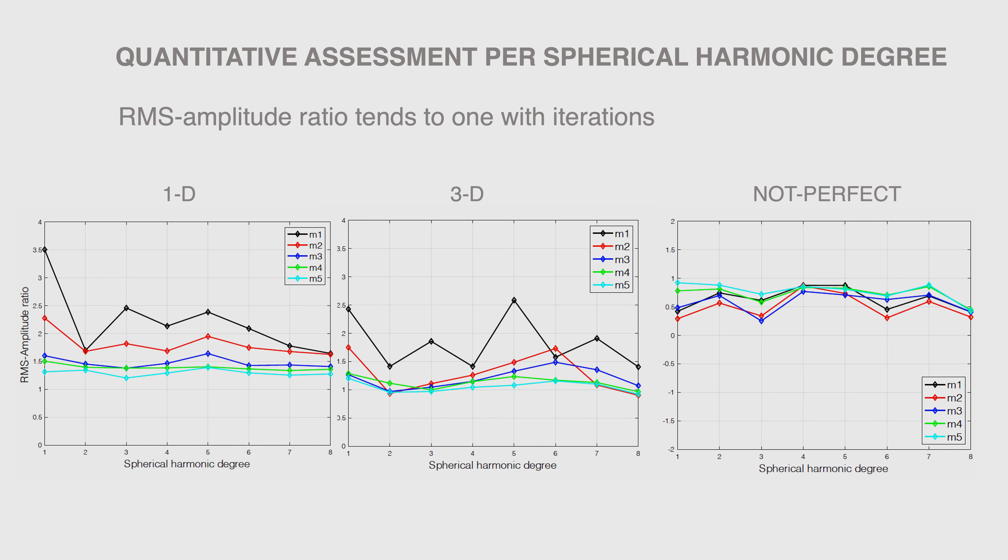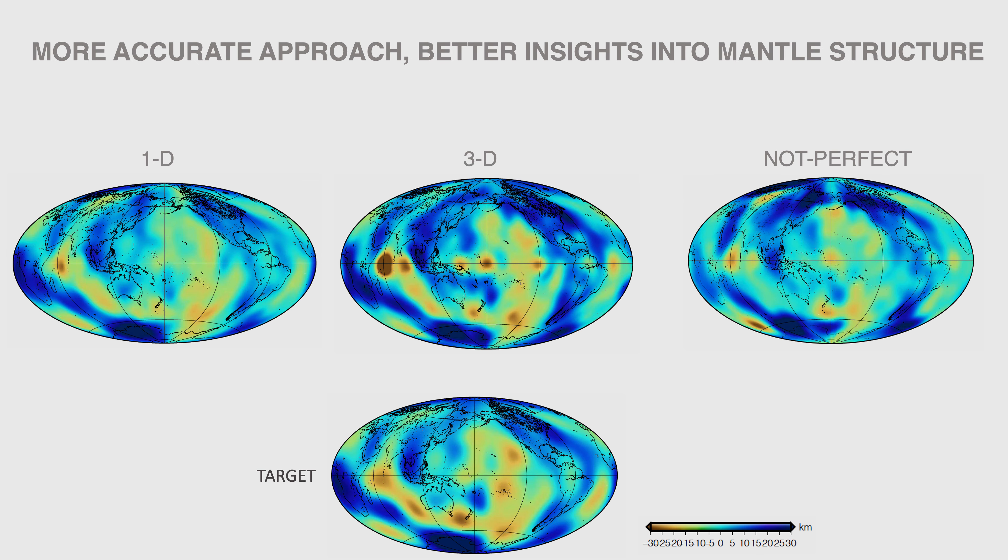The main message here is that to learn more accurately about discontinuity topography, a step-by-step approach treating seismic waves as they naturally occur is quite useful. The new topography maps, deriving from full waveform inversion, could give more information to geophysicists who investigate the dynamics and the composition of the mantle.